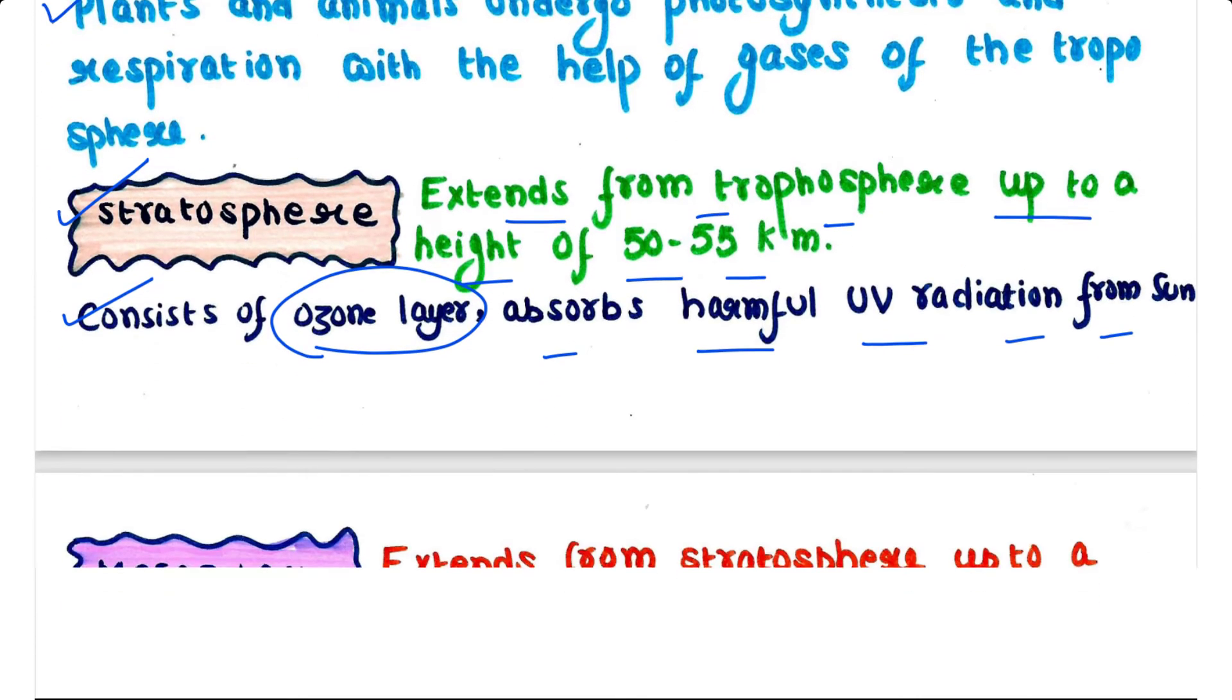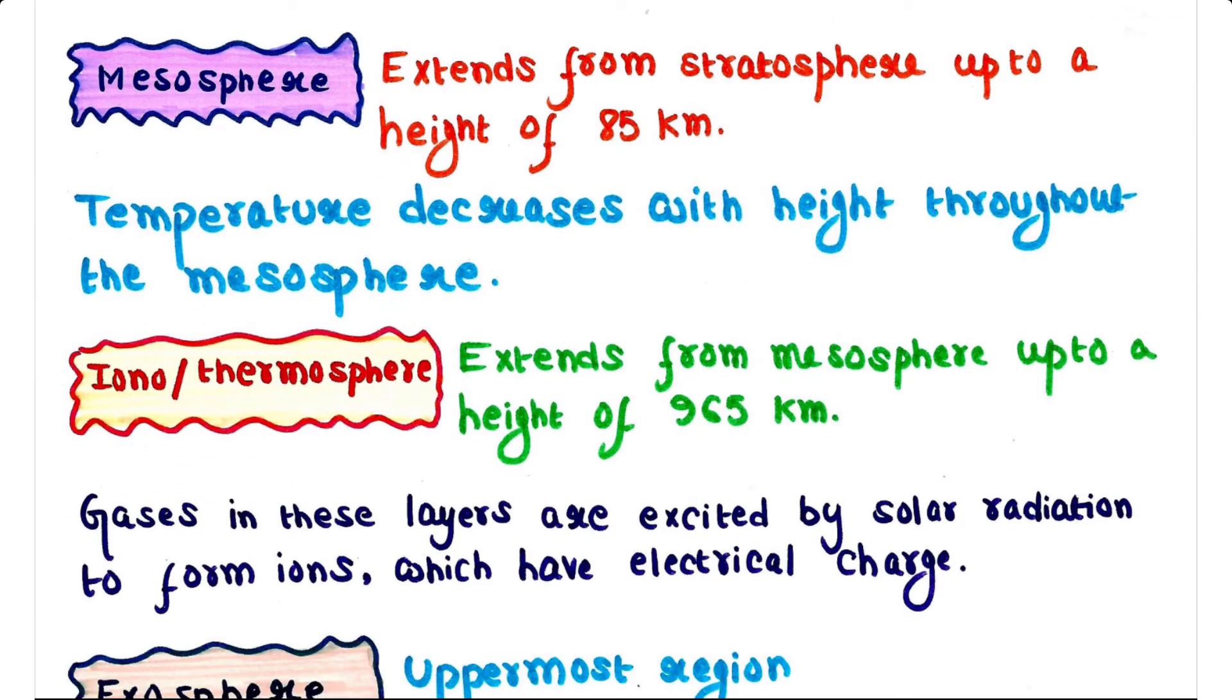After stratosphere we have mesosphere. Mesosphere extends from stratosphere up to a height of 85 kilometers, and temperature decreases with the height throughout the mesosphere.